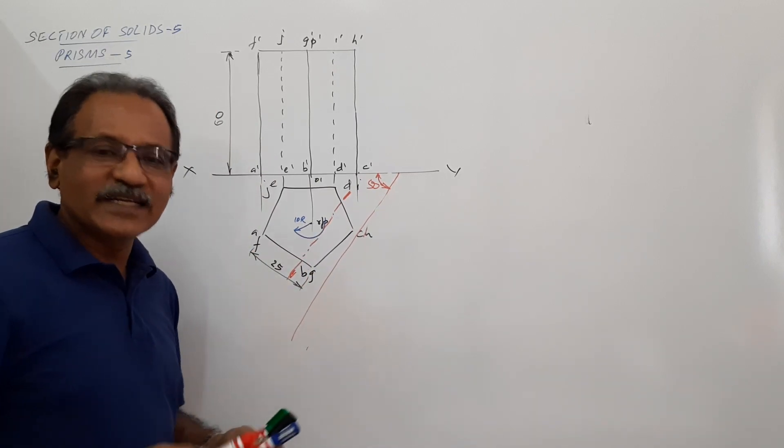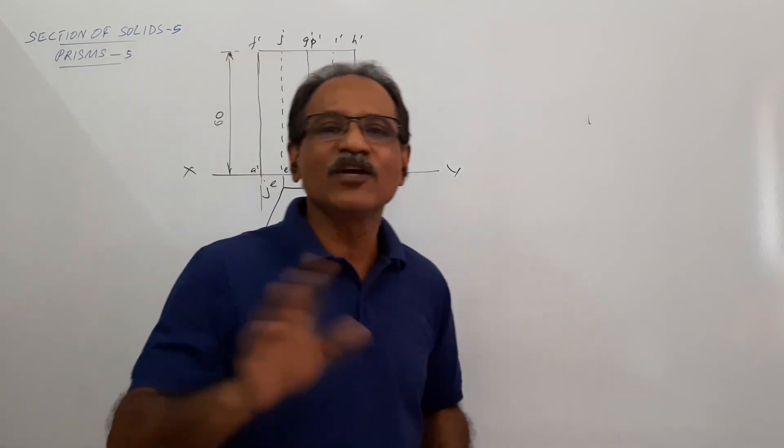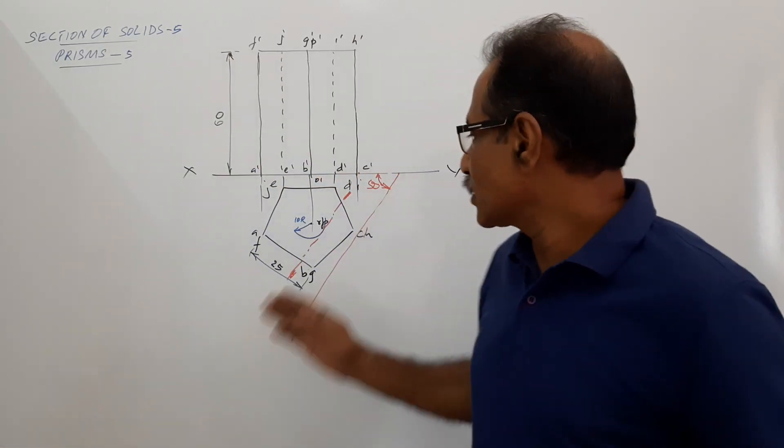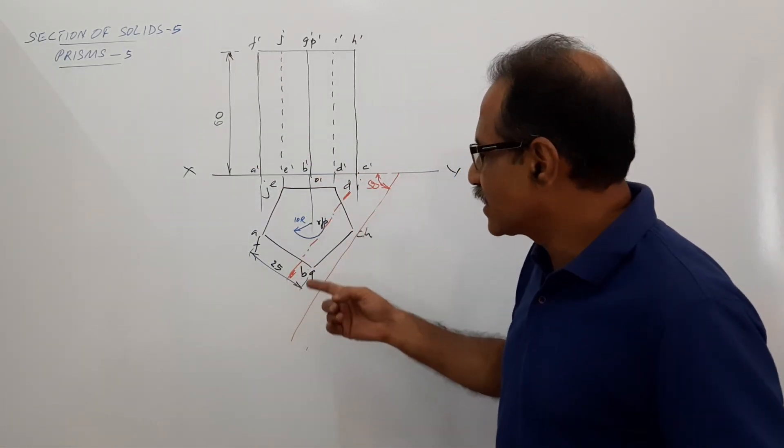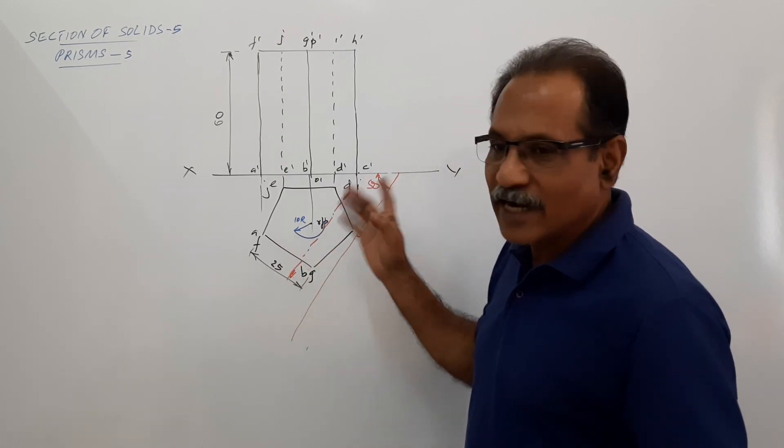How many vertical edges it cut? It does not cut any of the vertical edges. Instead it cut the base at 2 points and top at 2 points.